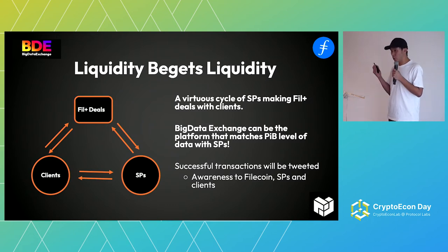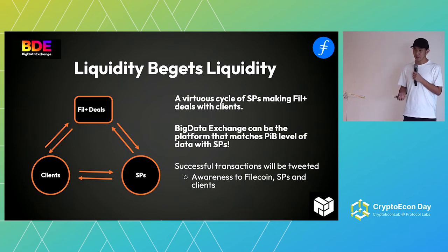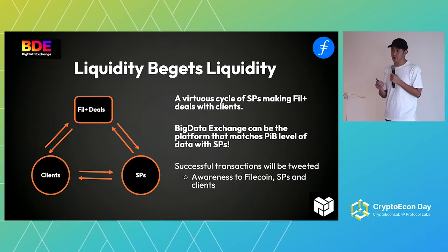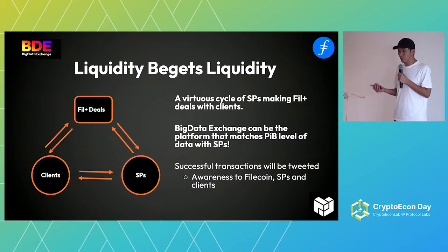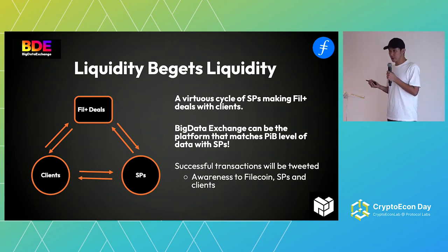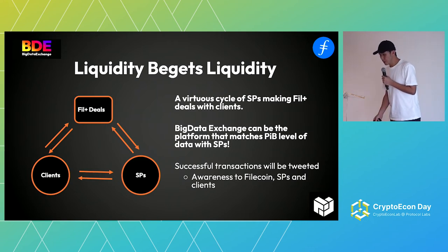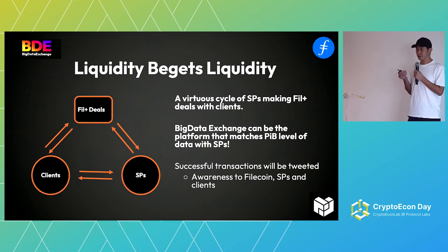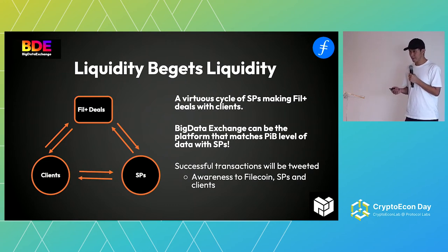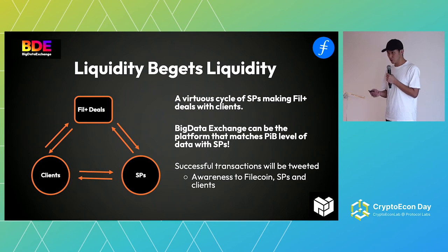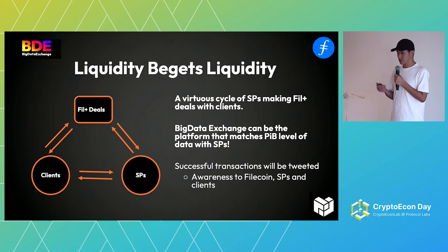Once you have a few successful deals, SPs will see that it's easy to get FIL+ deals here and start bidding. Then when clients see that SPs bid aggressively, they will come on board as well. This is where liquidity begets liquidity and we can do more interesting stuff. Mobilization of teams creates faster throughput and a higher cycle. We can be the platform that matches petabyte-level data with SPs. When there's exciting price action in the auction, we'll tweet this out to generate awareness. The pie is going to get bigger — it's really not a zero-sum game.